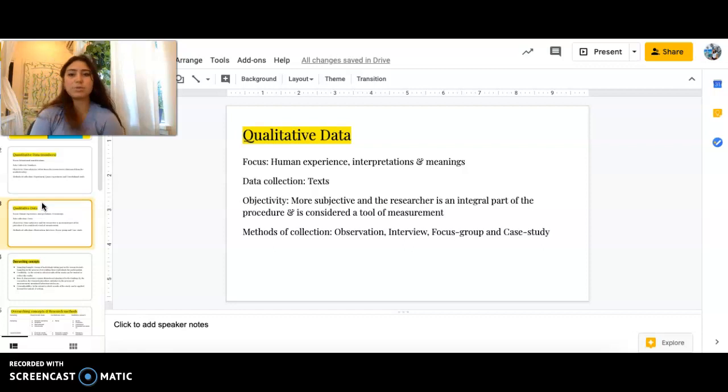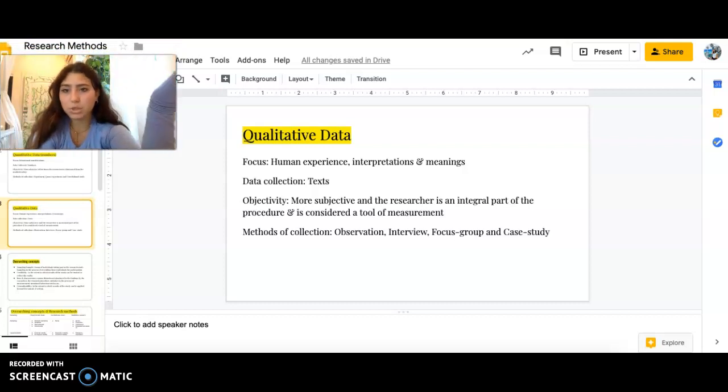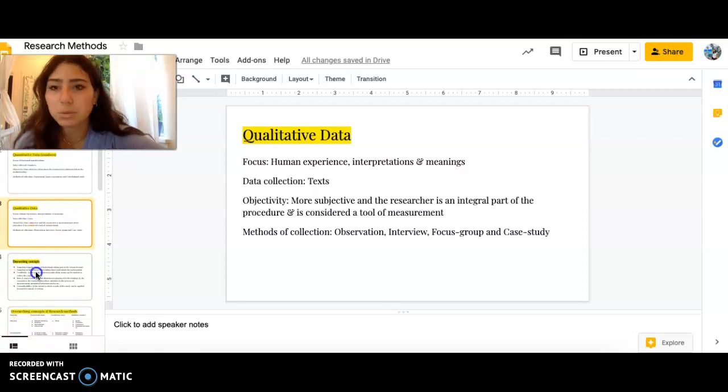So the focus is on human experience interpretations and meanings, and the data collection would be texts. Qualitative data tends to take a lot more time to analyze just because quantitative, you're just looking at numbers and you're establishing a correlation or whatever right then and there. But then for qualitative data, you have to go through all of the texts and all of the interviews and things like that. If you were to do an interview, you'd have to transcribe the entire thing and then analyze it. So the objectivity is more subjective, and the researcher is an integral part of the procedure and is considered a tool of measurement most times. Some methods of collection: we've got observation, interview, focus groups, case study. Those are some of the popular ones, but we'll go into more of them.